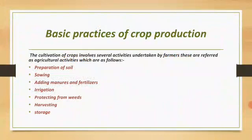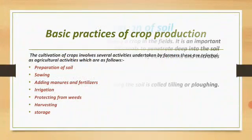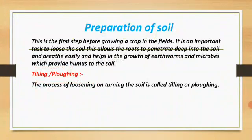First we have the first basic practice which is preparation of the soil. This is the first step before growing a crop in the fields. It is an important task to loosen the soil. This allows the roots to penetrate deep into the soil and breathe easily. We make the soil loose so that the roots can penetrate deeply. This also helps in the growth of earthworms and microbes which provide humus to the soil.